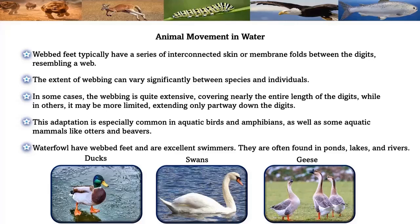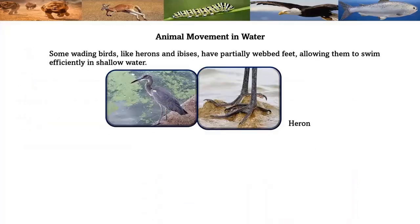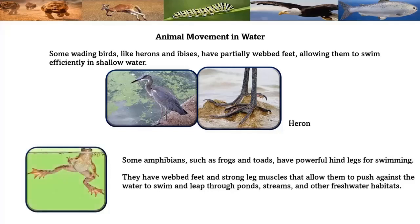Waterfowl have webbed feet and are excellent swimmers, found in ponds, lakes, and rivers — examples include ducks, swans, and geese. Some wading birds like herons and ibises have partly webbed feet, allowing them to swim efficiently in shallow waters. Some amphibians such as frogs and toads have powerful hind legs for swimming, with webbed feet and strong leg muscles that allow them to push against the water to swim and leap through ponds, streams, and freshwater habitats.